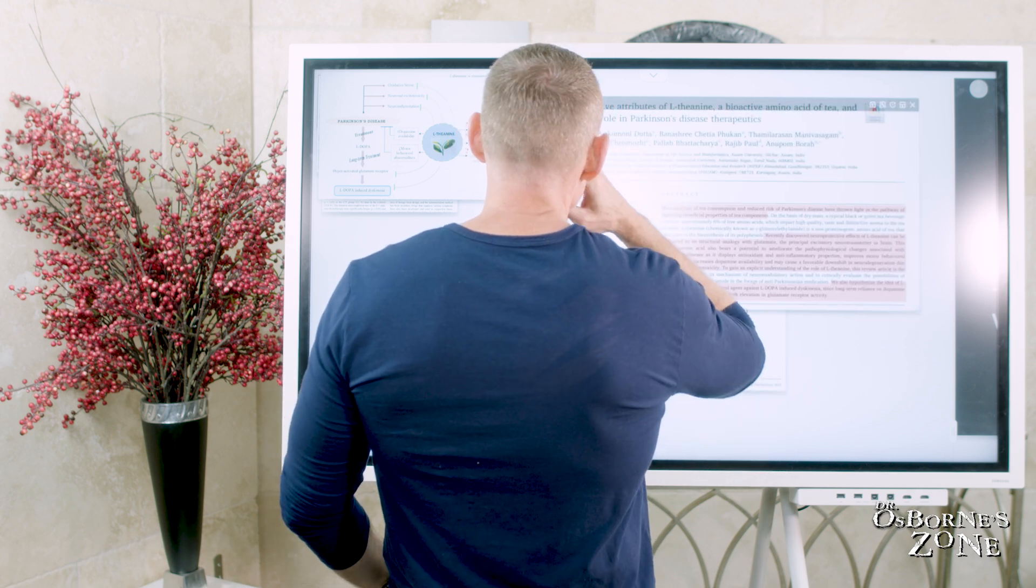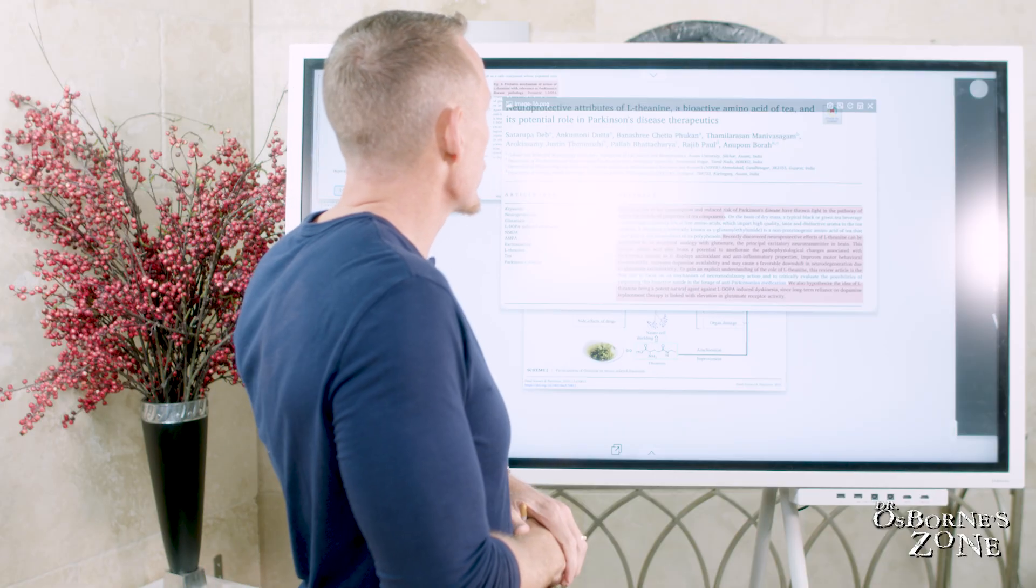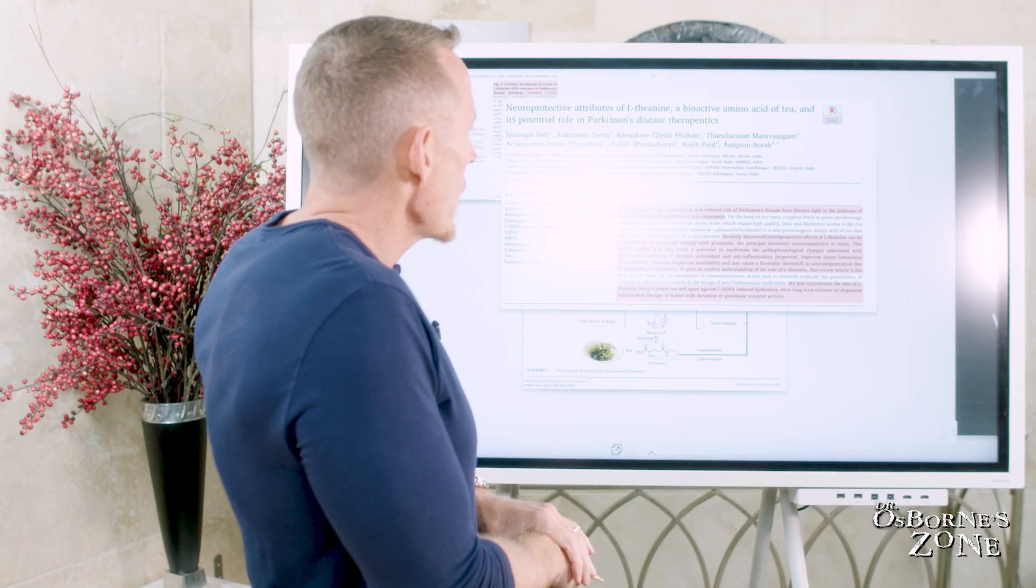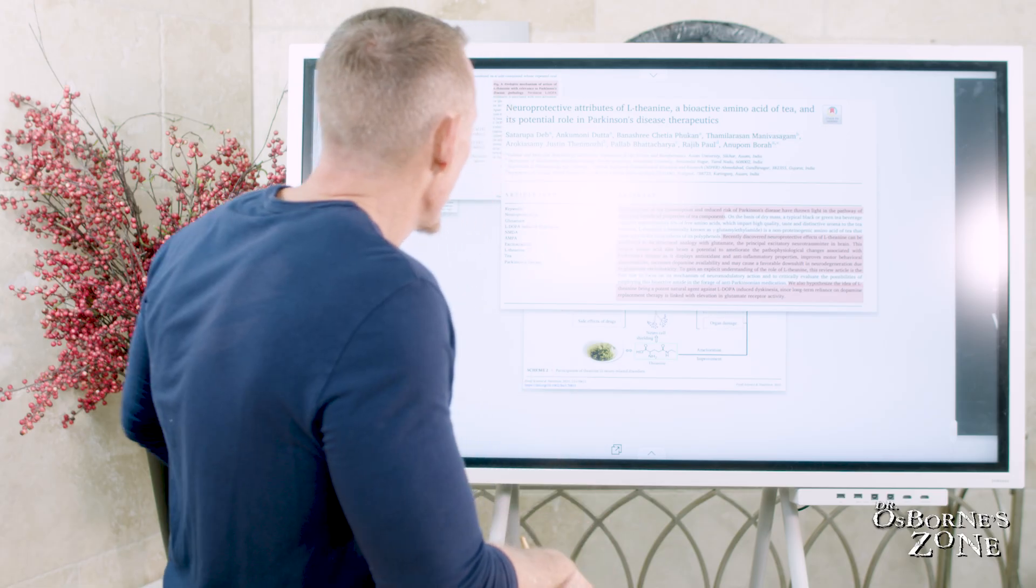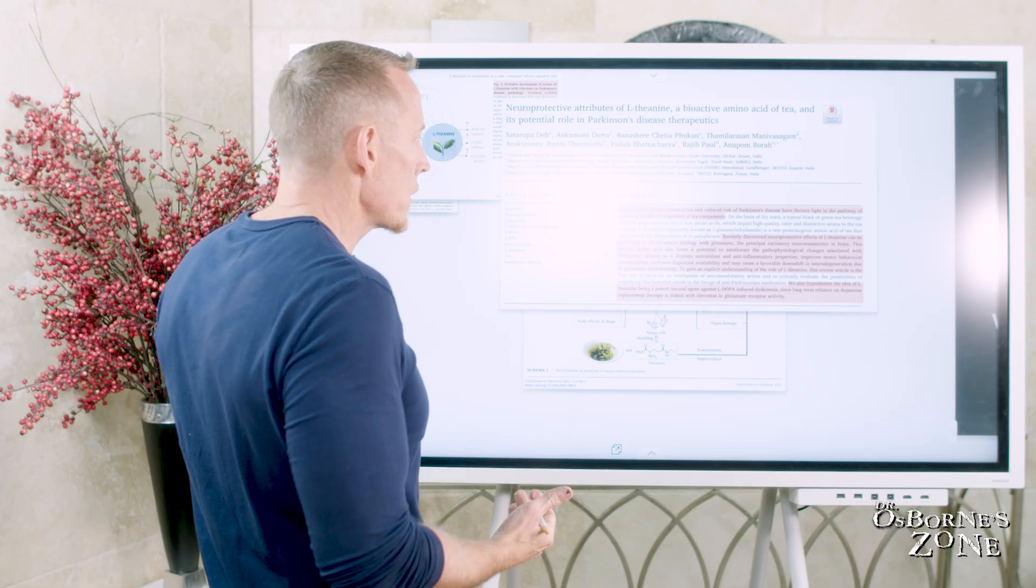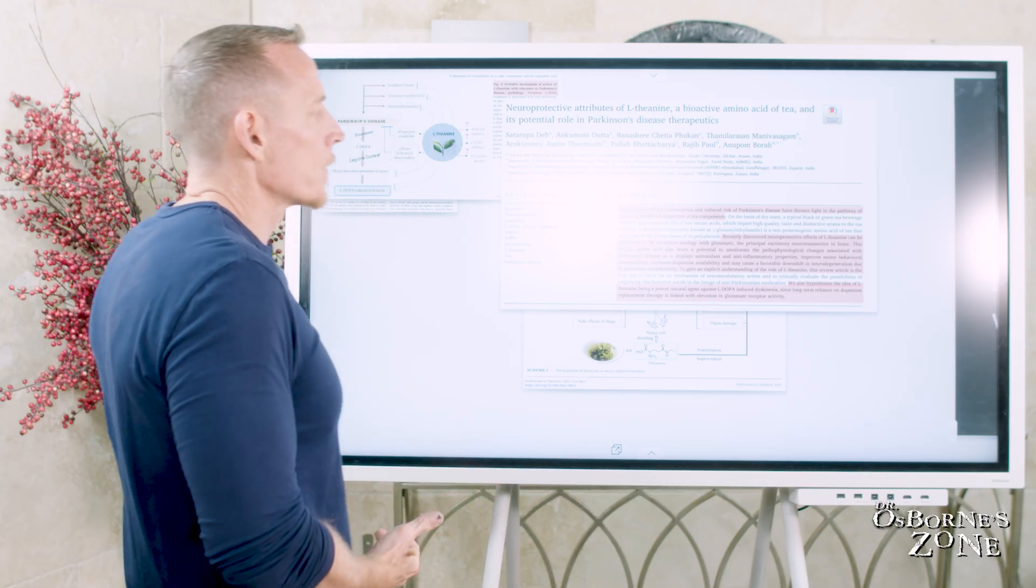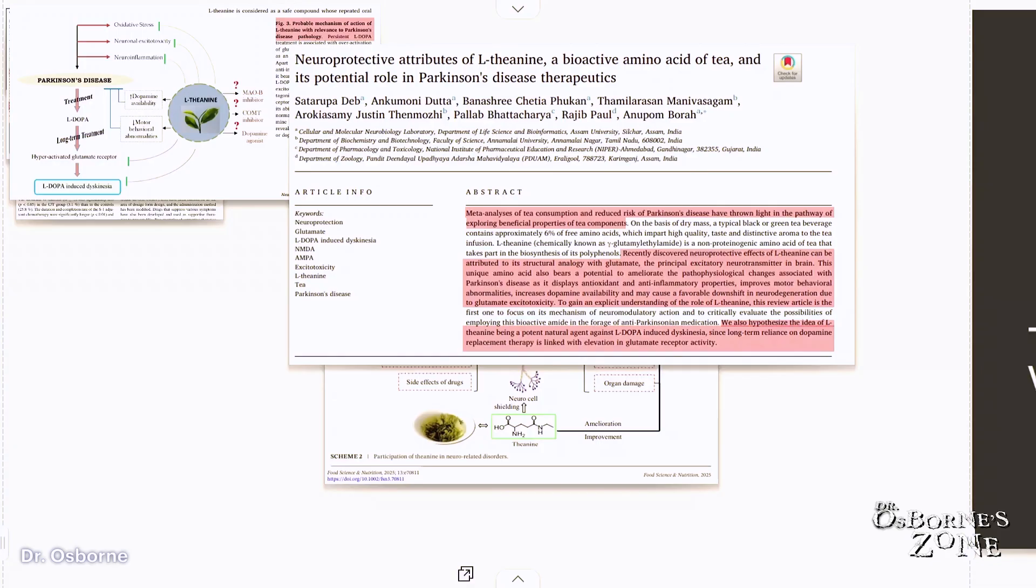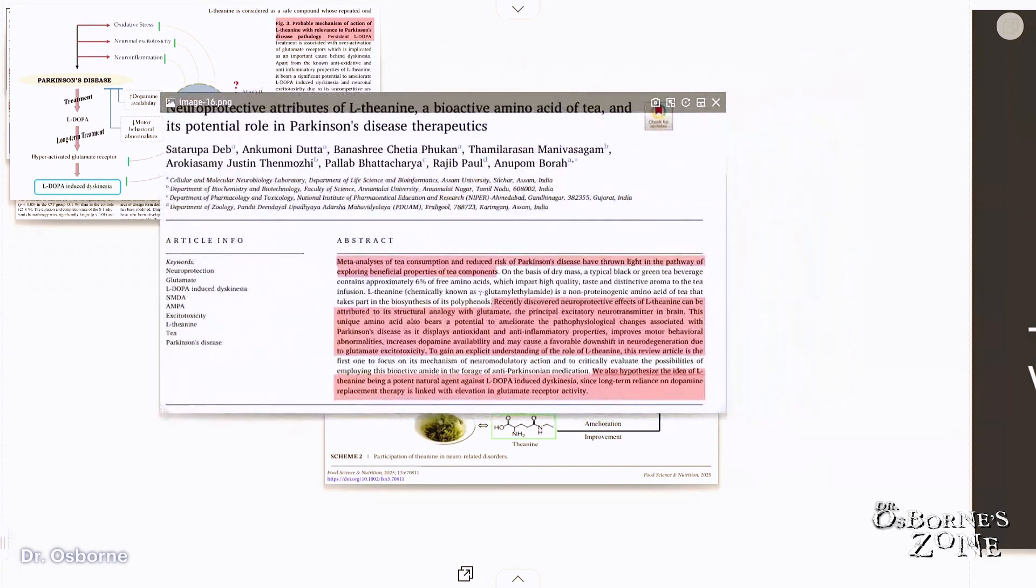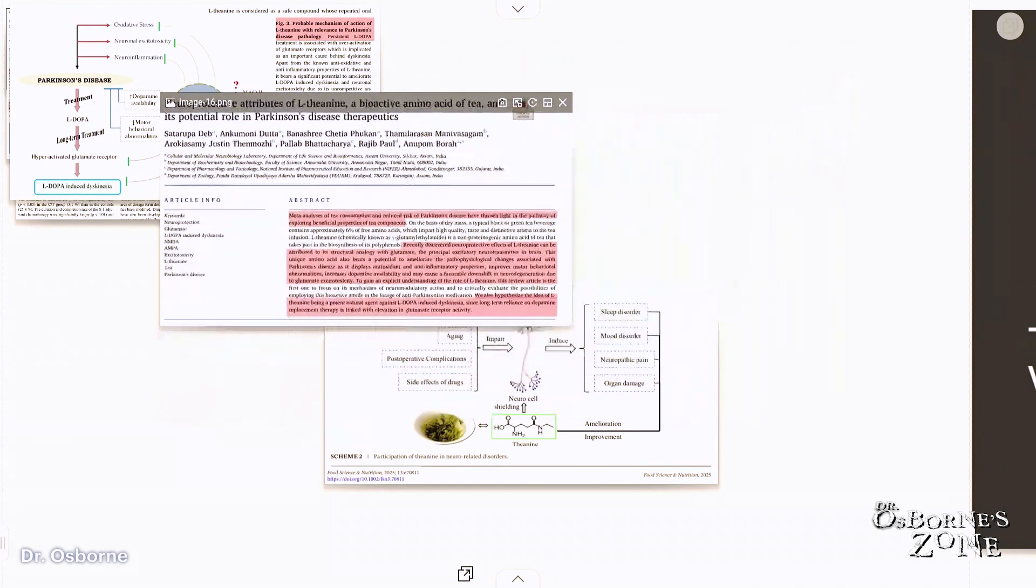This research study was investigating patients with Parkinson's disease who are on long-term L-DOPA. You have to understand L-DOPA, the primary drug to treat the tremors in Parkinson's disease, actually creates the very problem it's treating as you're on the drug for long periods of time. So it's one of the problems with long-term L-DOPA use. We hypothesize the idea that L-theanine being a potent natural agent against L-DOPA induced dyskinesia, since long-term reliance on dopamine replacement therapy is linked with elevation in glutamate receptor activity. One of the mechanisms by which L-theanine exerts its impact, we believe, is by blocking glutamate and glutamate is an excitatory neurochemical.